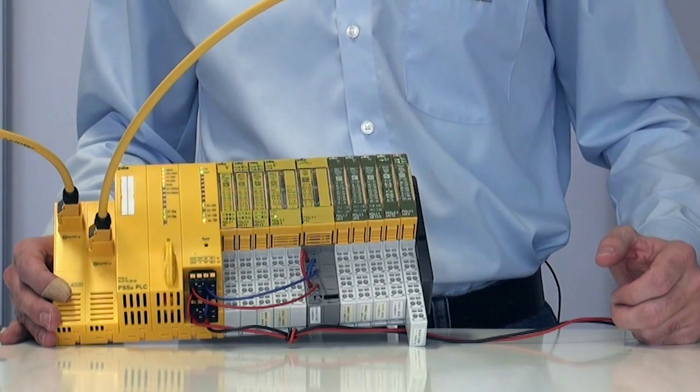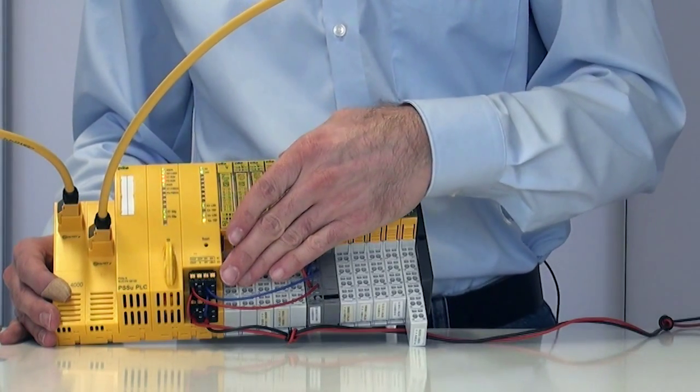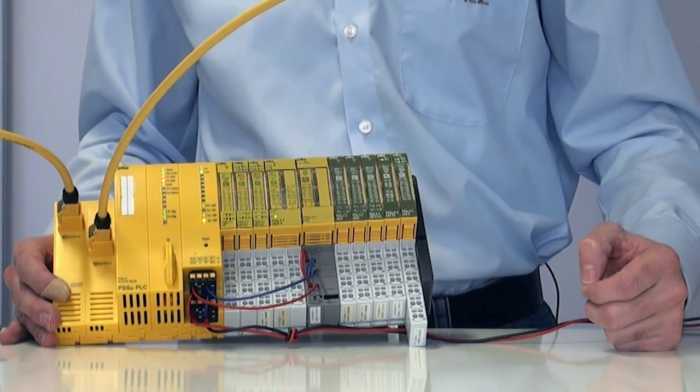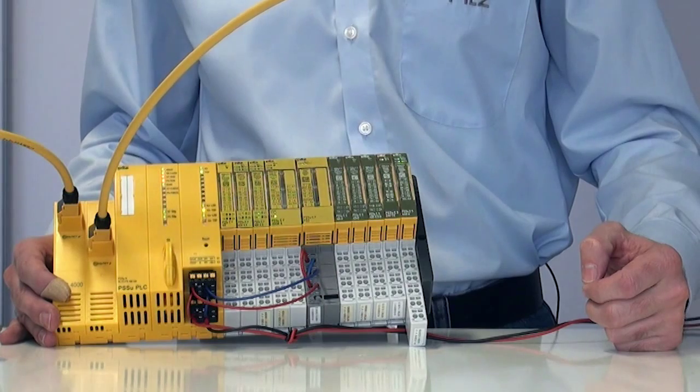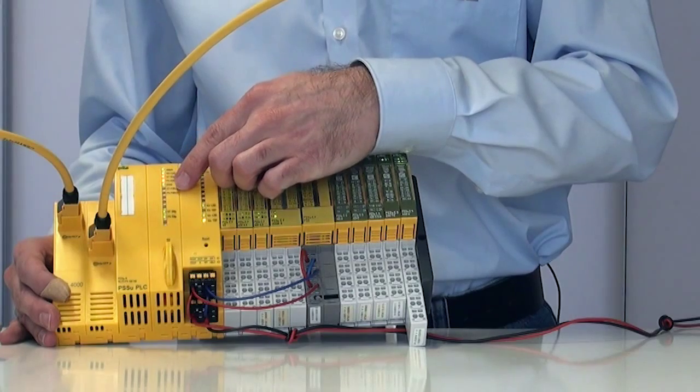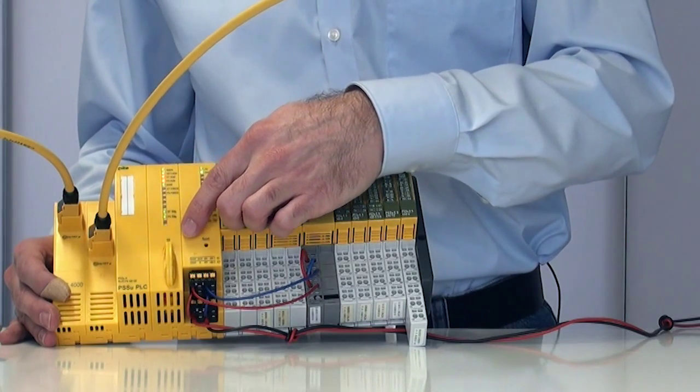The head module contains the supply voltages for the module and periphery supply. The two voltages are galvanically isolated. The LEDs on the head module display details of the system status as well as various internal states.